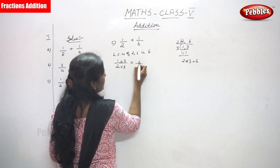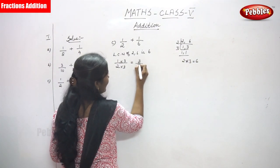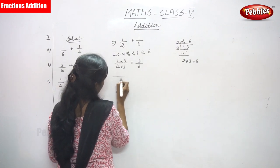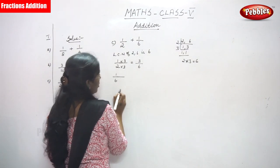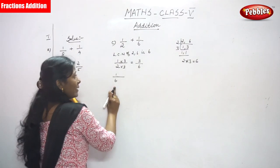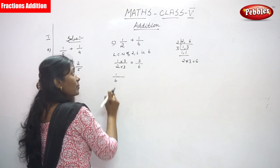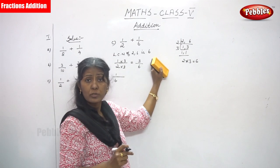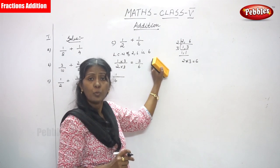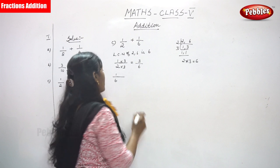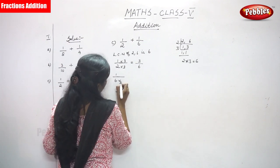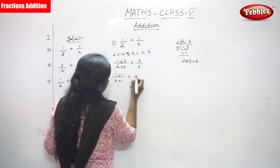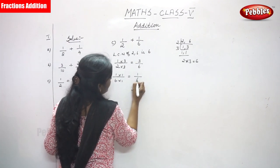For 1 by 2, I multiply by 3 — both numerator and denominator — because 2 into 3 gives 6, the common LCM. So 3 into 1 gives 3 by 6. For 1 by 6, the denominator is already 6, so I multiply by 1, giving 1 by 6.